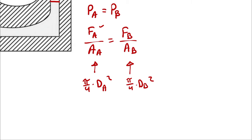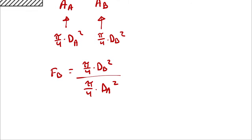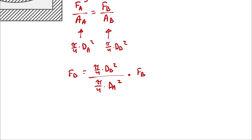FA is known, so I can write FB as pi over 4 times diameter B squared divided by pi over 4 times diameter A squared times FA. Pi over 4 cancels.